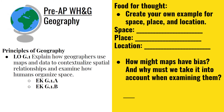Create your own example for space, place, and location. Take a few moments to think of what is a space that you recognize — it can even be in your own home. Consider place as well, and location. After doing that, consider how might maps have bias, and why must we take into account that bias can be included in maps when examining them.